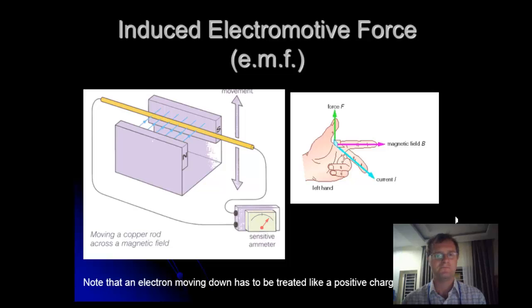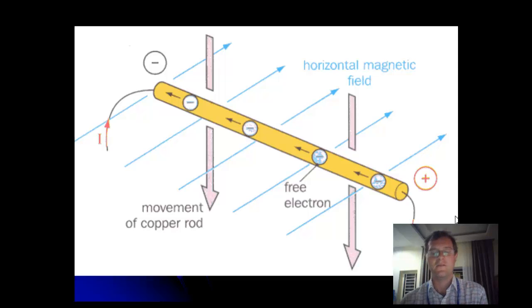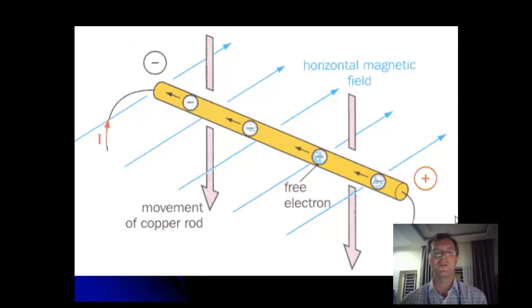Let's look at this as a more detailed diagram. If the wire is moving downward through a horizontal magnetic field, use Fleming's left-hand rule. The first finger represents the magnetic field. The second finger points upward — because although the copper rod is moving downwards, that means electrons are moving down, so conventional current is in the opposite direction. The force pushes these electrons toward the negative end of the wire, causing them to move in that direction. That's the basic idea behind why that motion comes about.